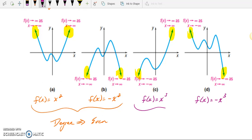And if we see that the function has 1 up, 1 down or 1 down, 1 up, then we can say the degree of the function is odd.